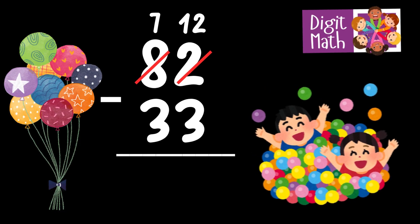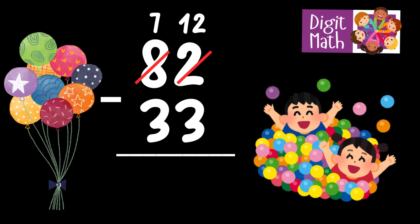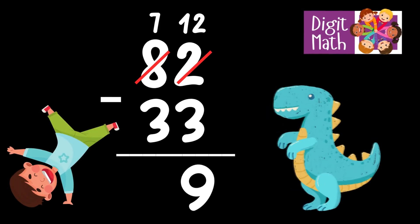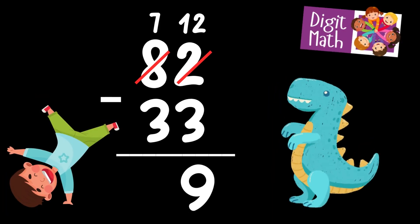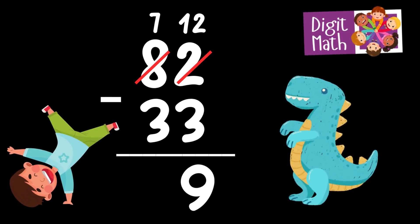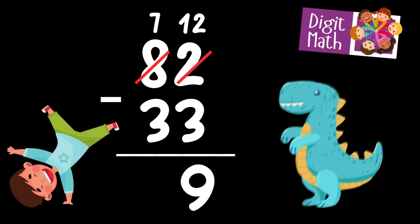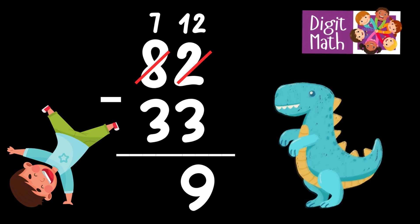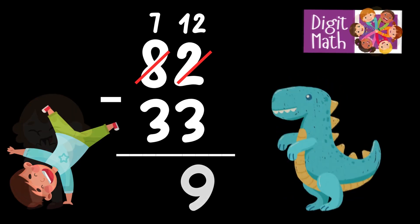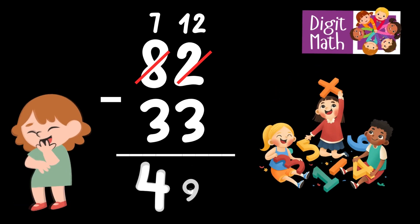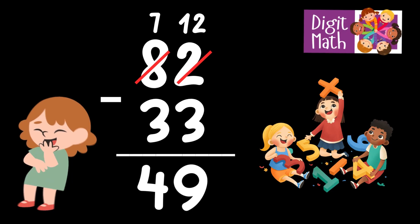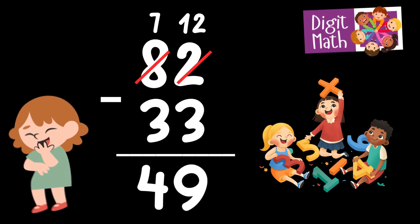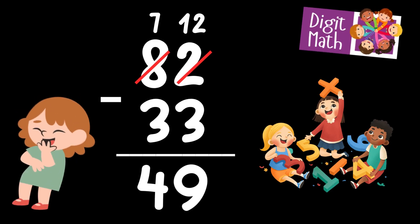Now we have 12 in the Units column. Subtract 3 from 12, which equals 9. In the Tens column, we now have 7. Subtract 3 from 7. So the final result is: 82 minus 33 equals 49.